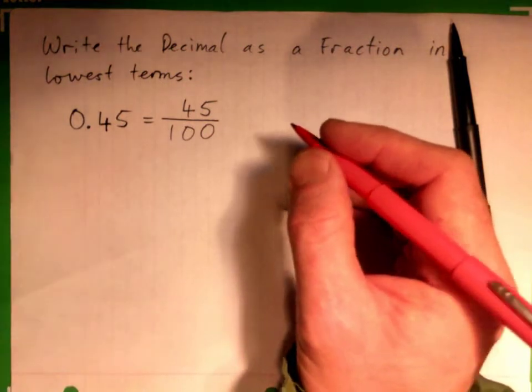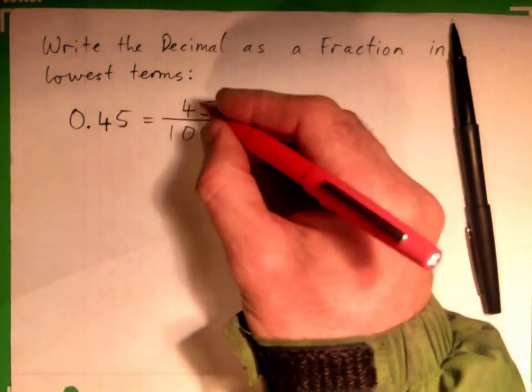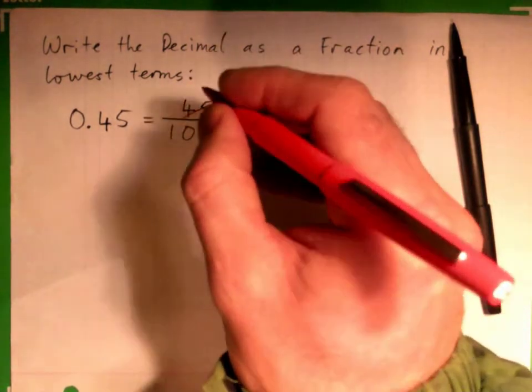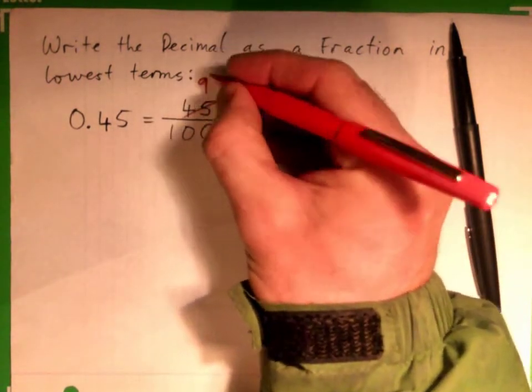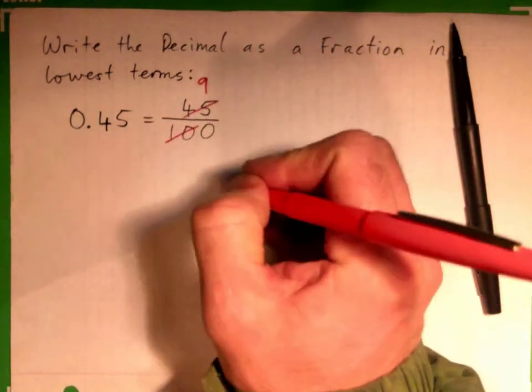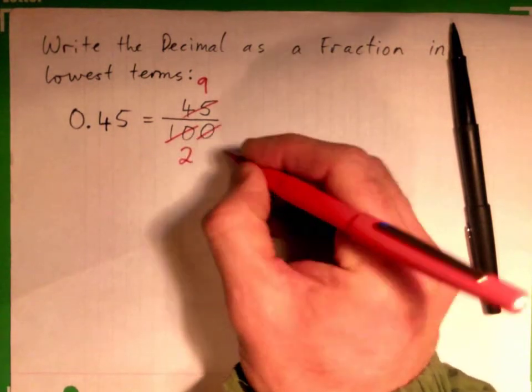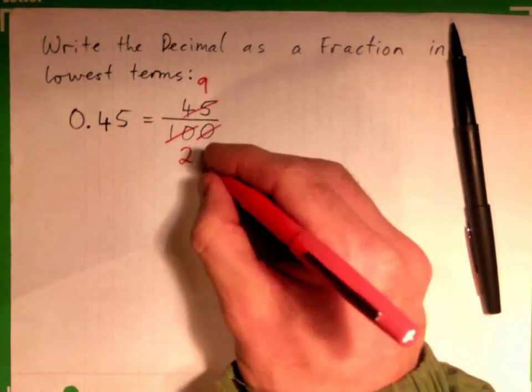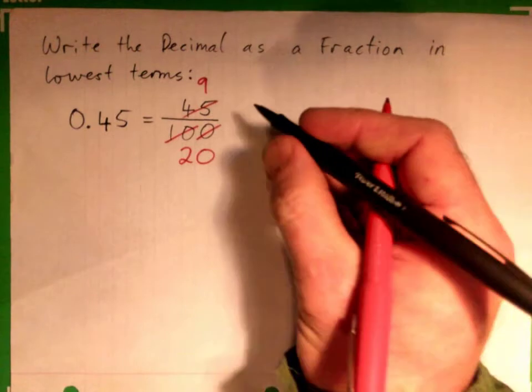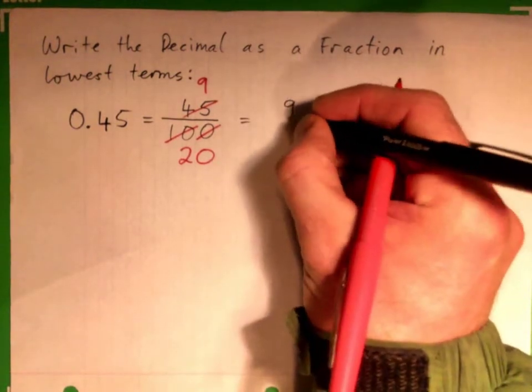Correct. So what's 5 into 45? 9. Lovely. What's 5 into 10? 2. Good. And what's 5 into 0? 0. So you get 9 on the top, 20 on the bottom.